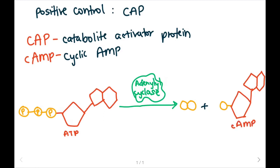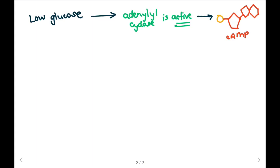The concentration of cAMP depends on the concentration of glucose. When there's low glucose in our cell, then the enzyme adenylyl cyclase is active, which means that we can catalyze the reaction to break ATP and we will produce cAMP.